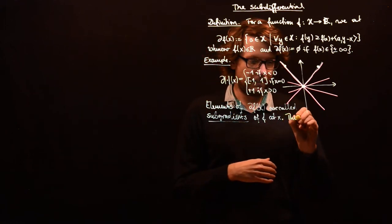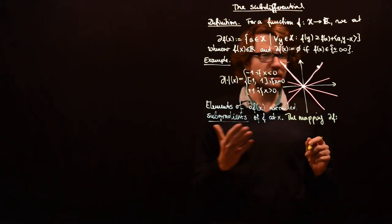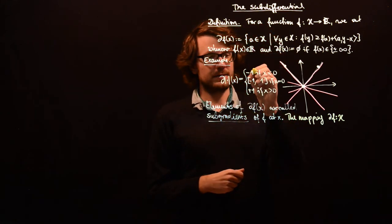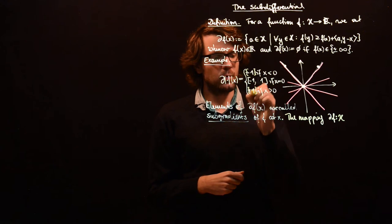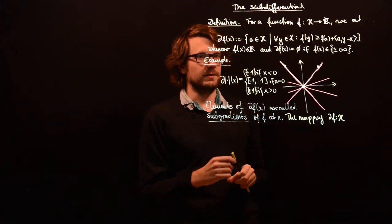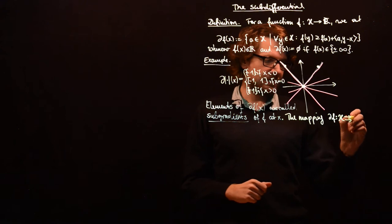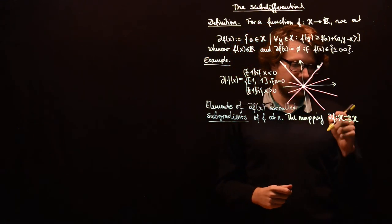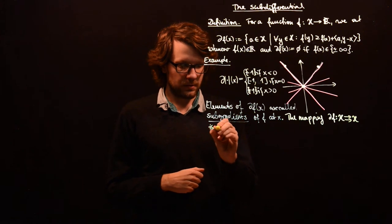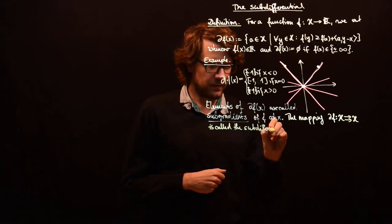The mapping df: what kind of mapping is this? We take a point in h and associate with it a subset. For the absolute value example, these are one-element sets — consisting only of minus one, or only of plus one respectively. This is therefore a mapping from h to the subsets of h, denoted h ⇉ h, and is called a set-valued mapping. This mapping is called the sub-differential.